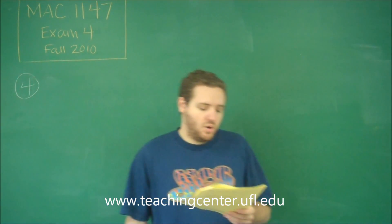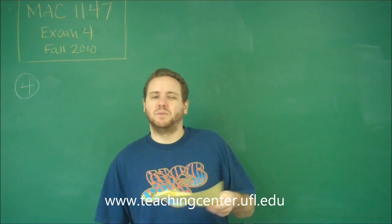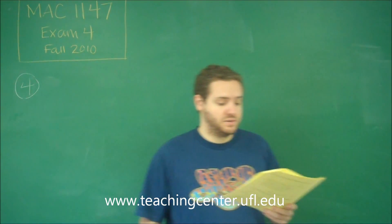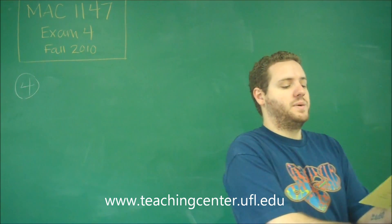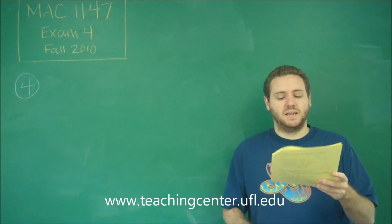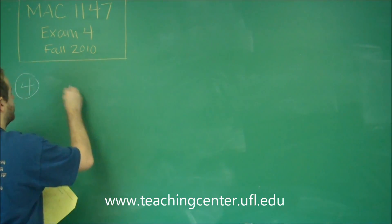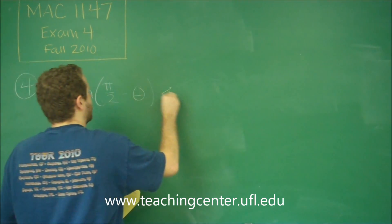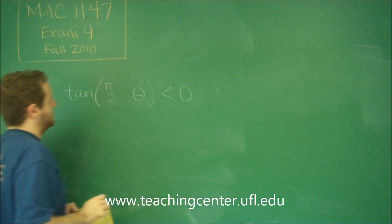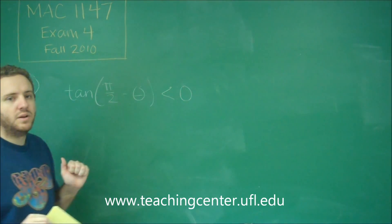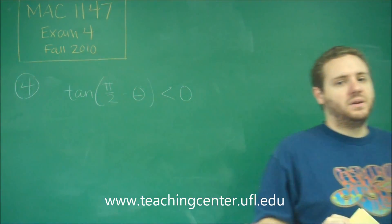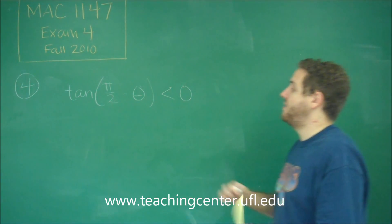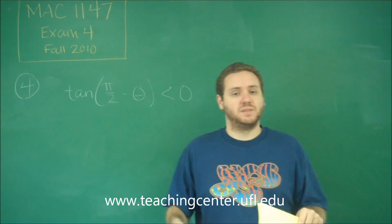For problem number four, we need to determine the quadrant of an angle based on some information that we're given. Some of these are given in a little bit tricky formats that need to be simplified first. The first piece of information is that tangent of pi over two minus theta is less than zero. This can help us figure out in which quadrant the angle could be, because we first need to simplify what tangent of pi over two minus theta means. Once we have that, we know that this is supposed to be negative, so that will tell us something about the quadrants.